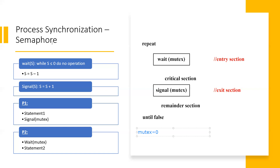A semaphore is a variable whose value is either 0 or 1. For example, mutex is a variable. In the previous tutorial, we have seen process synchronization under mutual exclusion.